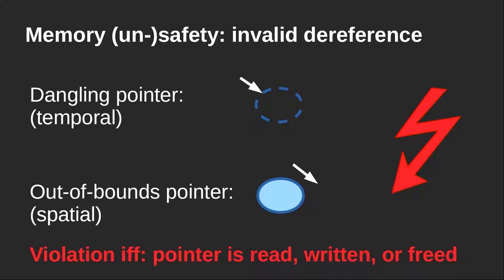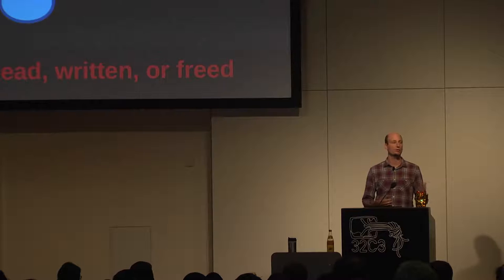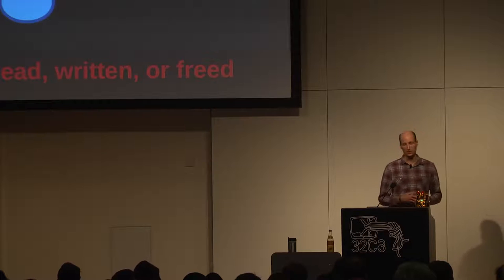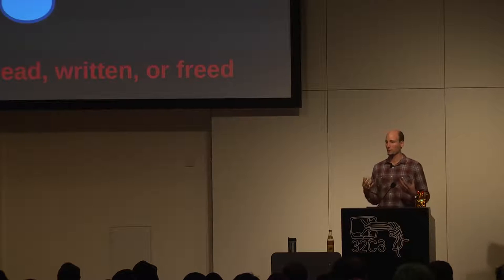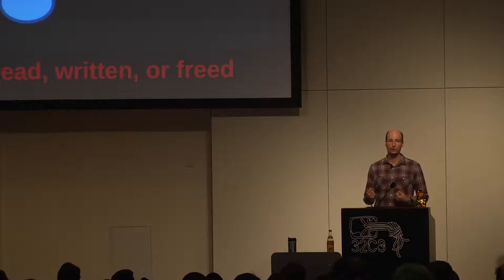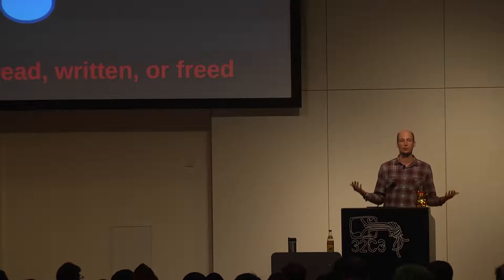It is only a violation or invalid dereference if the pointer is read, written, or freed. According to the C language standard, you are completely free to have out-of-bounds or dangling pointers, as long as you do not dereference them. This makes finding these bugs so hard — it only becomes a bug if you actually use the invalid pointer.